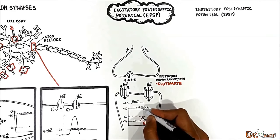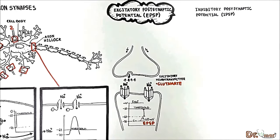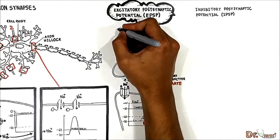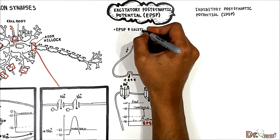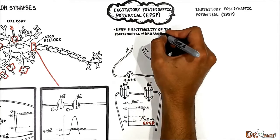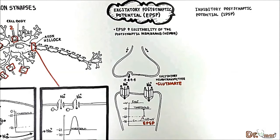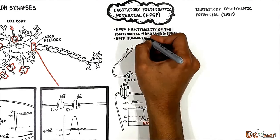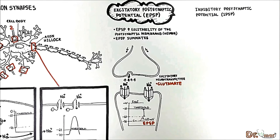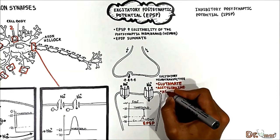Suppose the membrane potential becomes negative 60 millivolts — this 10 millivolt depolarization is called the excitatory postsynaptic potential (EPSP). The EPSP brings the membrane potential closer to the threshold potential at negative 10 millivolts, increasing the excitability of the postsynaptic neuron and making it more likely to fire an action potential. The EPSP is similar to the end plate potential found at the neuromuscular junction and also summates to reach threshold. In addition to glutamate, excitatory neurotransmitters include acetylcholine and aspartate.